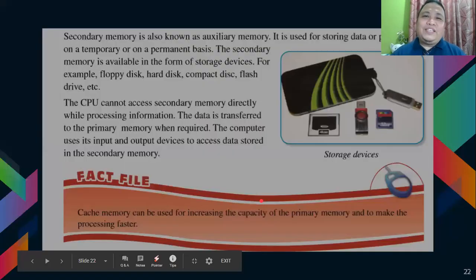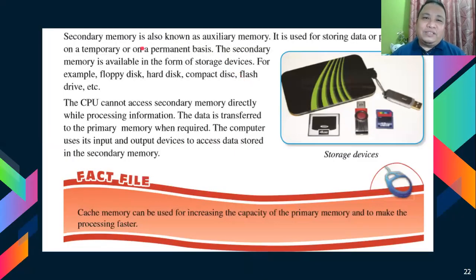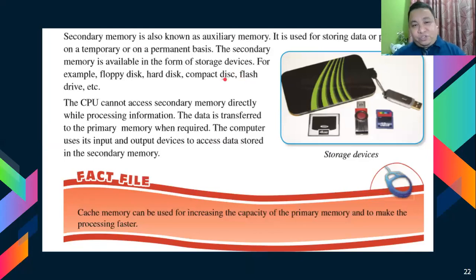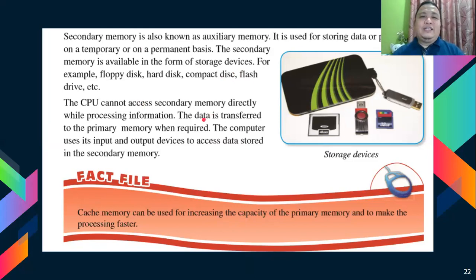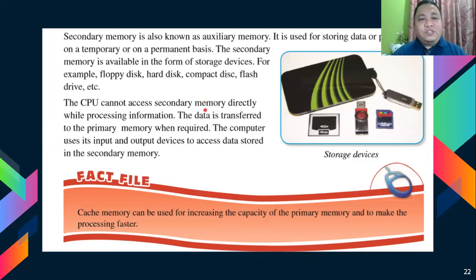We also have secondary memory, also known as auxiliary memory. This can be in the form of floppy disk, hard disk, compact disk, USB drive, external drive, and so on. The CPU cannot access secondary memory directly. While processing information, the data is transferred to the primary memory when required.